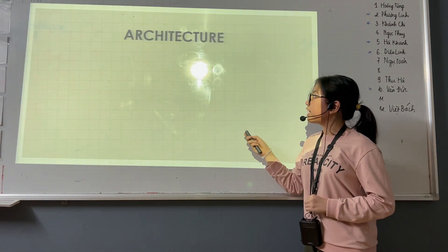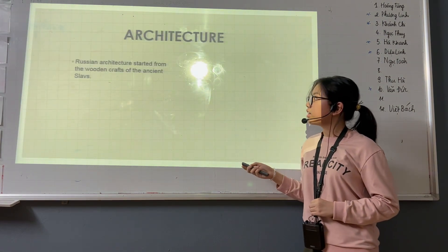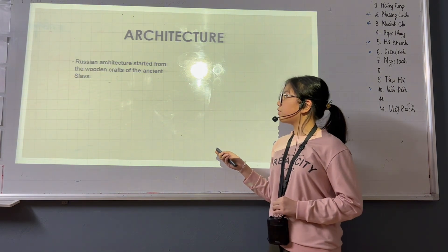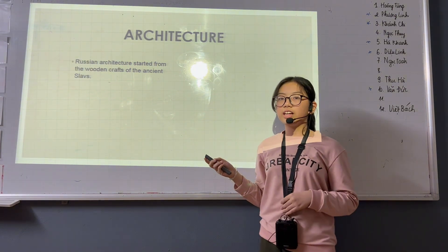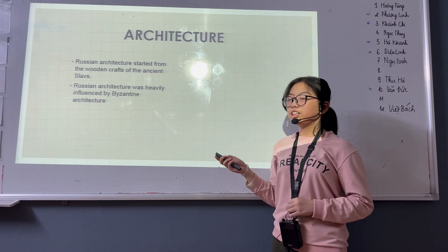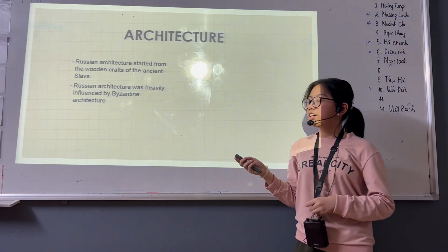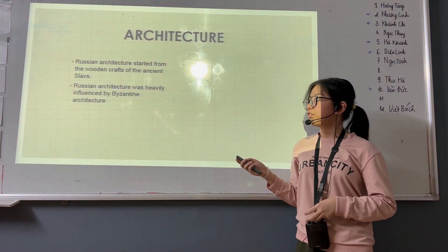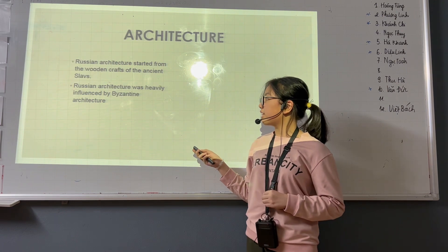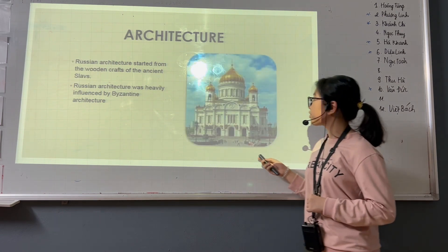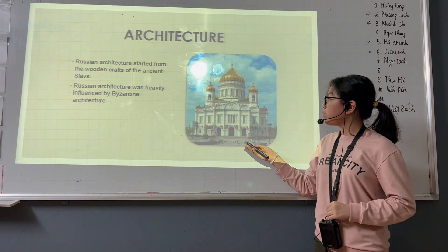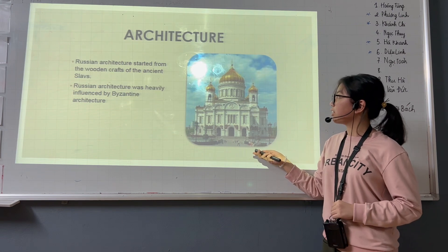The architecture. Russian architecture started from the wooden craft of the ancient Slavs and was heavily influenced by Byzantine architecture. Here is one of the famous buildings in Russia.